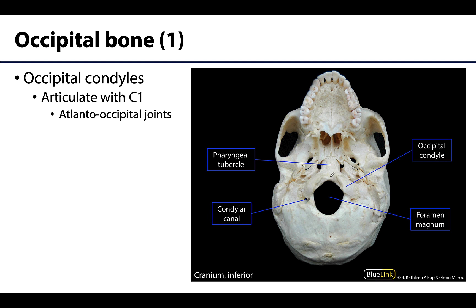In the inferior view, we return to the foramen magnum as a landmark for orientation. On either side of it are two smooth areas called the occipital condyles, which articulate with the first cervical vertebra — forming the atlanto-occipital joint. C1 is called the atlas, named after the mythological figure Atlas holding the world on his shoulders.